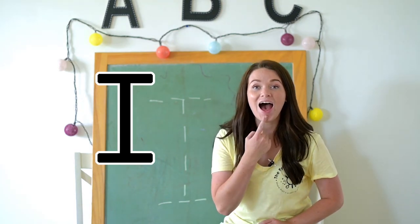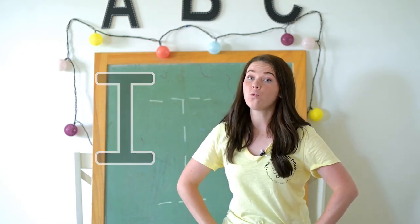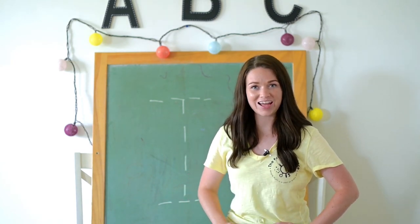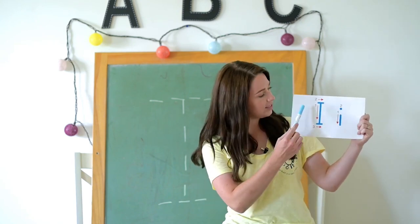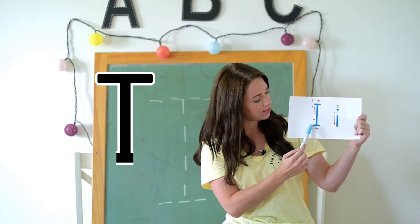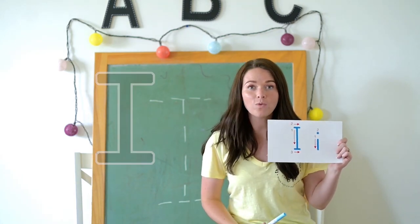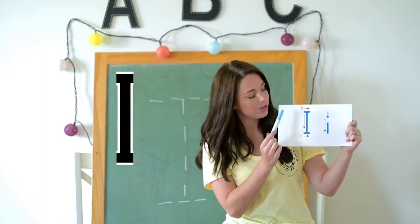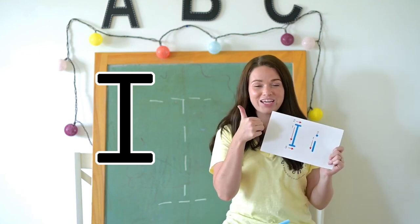Can you say I? Very good. So we are going to trace the letter I. Are you ready? When we trace the letter I, we say down, up, across, across I. Remember, we always start our letters at the top: down, up, across, across I. Very good.